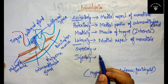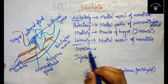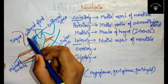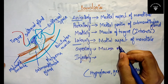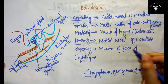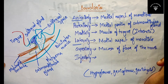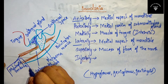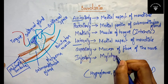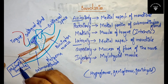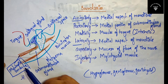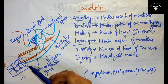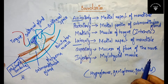Let's move on to the superior and inferior aspects. Superiorly you will be having the mucosa of the floor of the mouth — here is the tongue and here will be the mucosa of the floor of the mouth. Inferiorly you have the mylohyoid muscle. This is the most important muscle you have to remember, as it separates the sublingual and submandibular spaces.